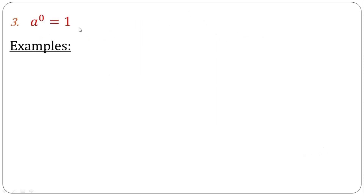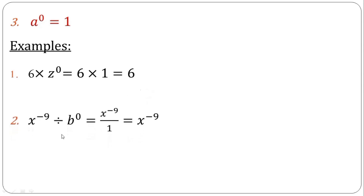The third rule is called the zero index rule. It says that anything raised to the power of 0 is 1 — any arbitrary number, positive, negative, or an alphabet, raised to the power of 0 equals 1. Look at the example: 6 times z raised to the power of 0 is 1 times 6, which equals 6. And here we have x raised to the power of minus 9 divided by b raised to the power of 0. Since b^0 is 1, dividing by it just leaves x raised to the power of minus 9.